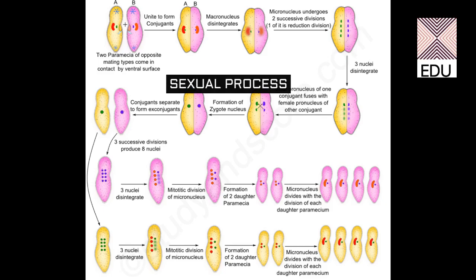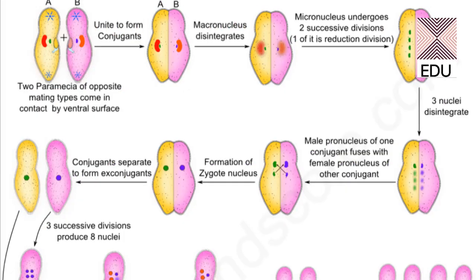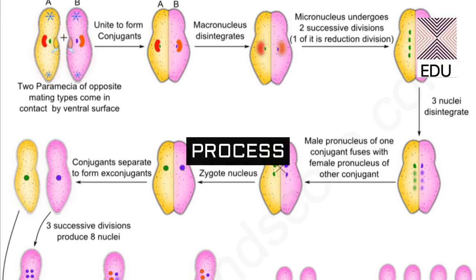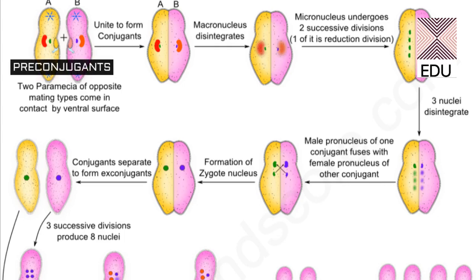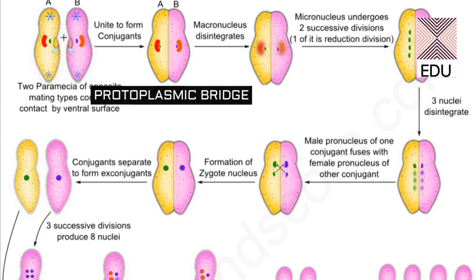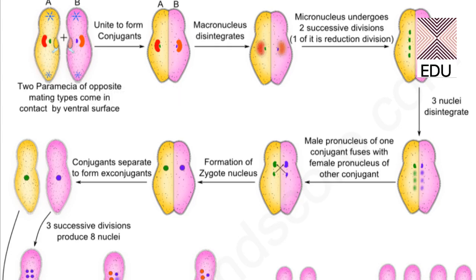Two paramecia of the same species join together and exchange their nuclear material, making it a true kind of sexual reproduction. Two individuals, called pre-conjugants, come in contact ventrally and unite by their oral grooves. The pellicle and ectoplasm degenerate at the point of contact and a protoplasmic bridge is formed. At this point they are considered to be conjugants.